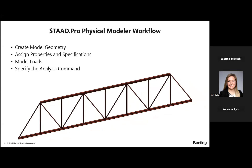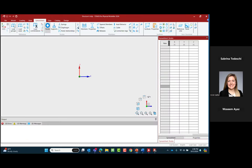Now let's talk about the workflow I use whenever modeling any type of structure in STADPRO. I typically start by creating my model geometry — for a simple truss structure that means all of my nodes and all of my members. Then I assign section properties, material properties, and specifications, which will be used during analysis. Then I model my loads, and then specify my analysis commands. It's a very straightforward workflow whether I'm using the physical modeler or the analytical modeler. Each node is defined by its x, y, and z global coordinate locations.